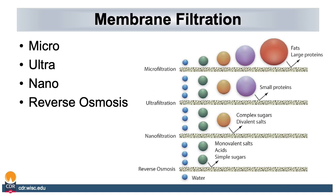As you can see, with the different filtration methods you retain different molecules. Reverse osmosis retains everything but water. Nanofiltration retains all sugars, fats, and proteins. Ultrafiltration retains all fat and protein. And microfiltration retains all casein and fat.